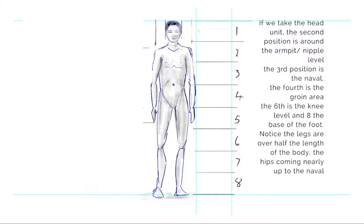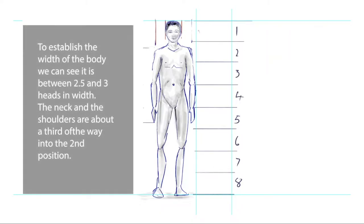We've just got to be considerate of this is a standing figure, male, and male and female obviously different as are children. We're going to quickly move on to looking at the width of the body. To establish the width, it's about two and a half to three heads wide.